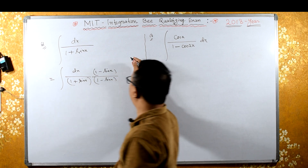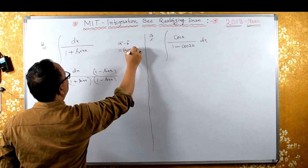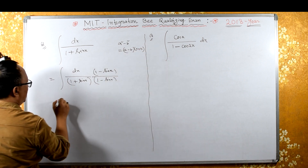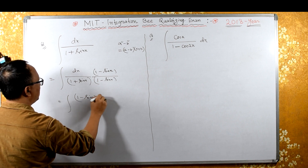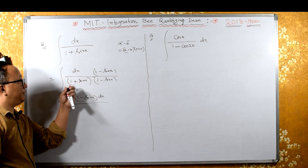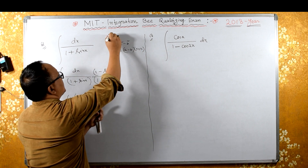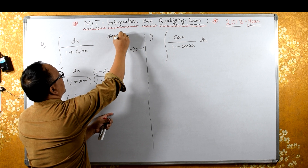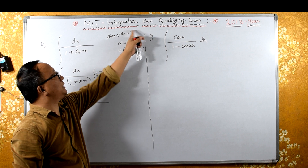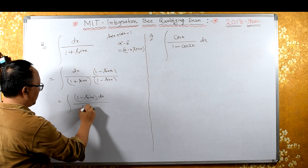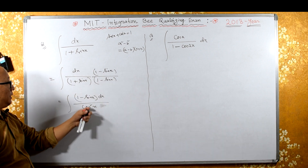Using the identity a² - b² = (a - b)(a + b), the denominator 1 - sin²x equals cos²x. So the integral becomes (1 - sinx)dx / cos²x, and we can now separate this into individual terms over cos²x.